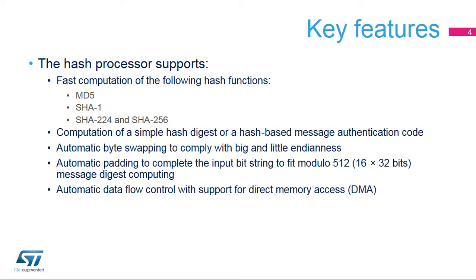The hash processor supports widely used hash functions, including Message Digest 5 (MD5), Secure Hash Algorithm SHA-1, and the more recent SHA-2 with its 224 and 256-bit digest-length versions. A hash can also be generated with a secret key to produce a message authentication code, or MAC. The processor supports bit, byte, and half-word swapping, and automatic padding of input data for block alignment. It can also be used in conjunction with the DMA for automatic processor feeding.